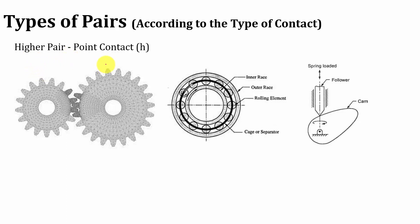Whenever there is a point contact between two mating surfaces, it is called a higher pair. In gears, if you zoom in, you can see there is a point contact. In bearings, there is contact between the balls and the inner and outer races, which is a point contact. Whenever there is contact between a circular surface and a straight surface, there will be a point contact. Also, a cam connected with a follower has a point contact, so it comes under a higher pair.